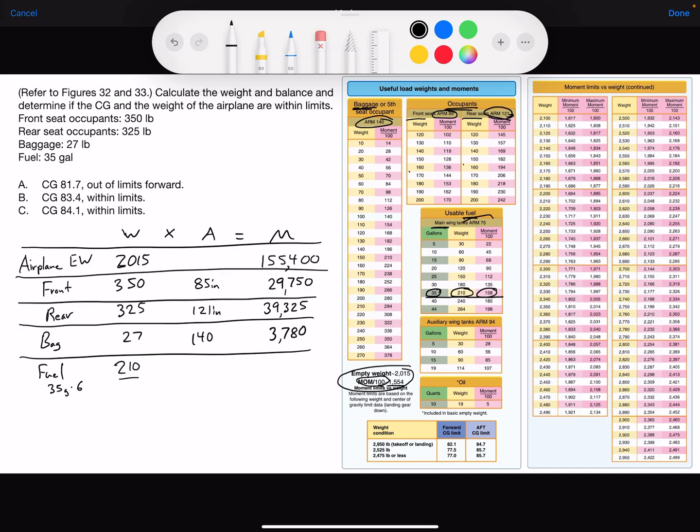But if you use the arm of 75, and you multiply that by 210, you should get 15,750.